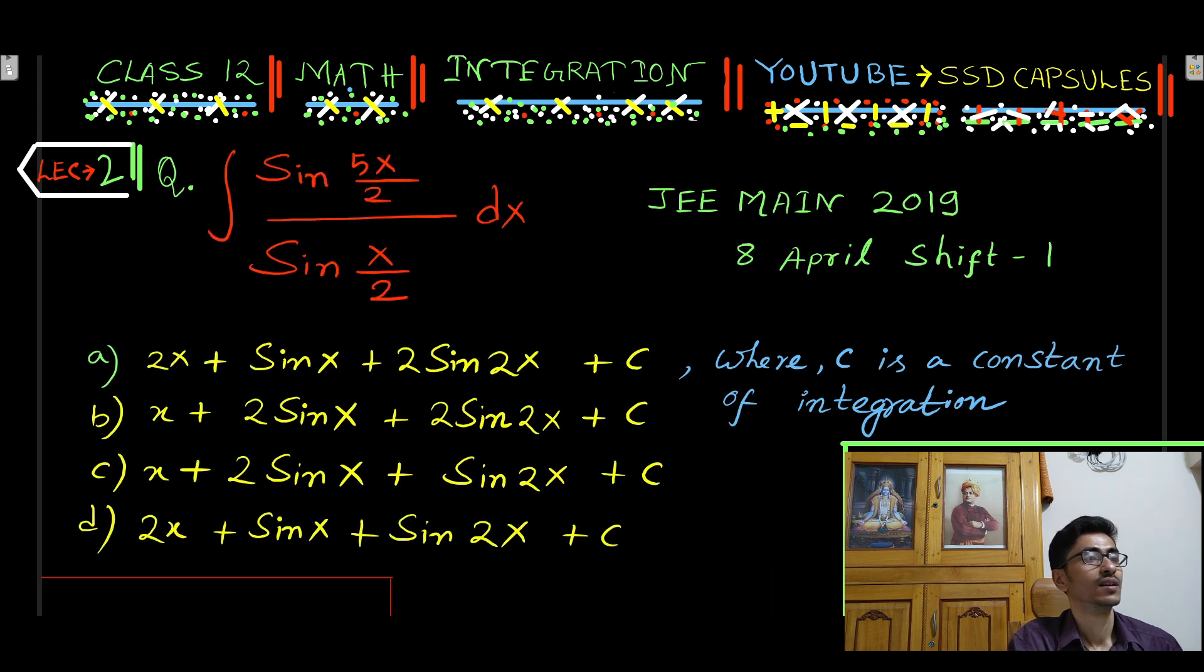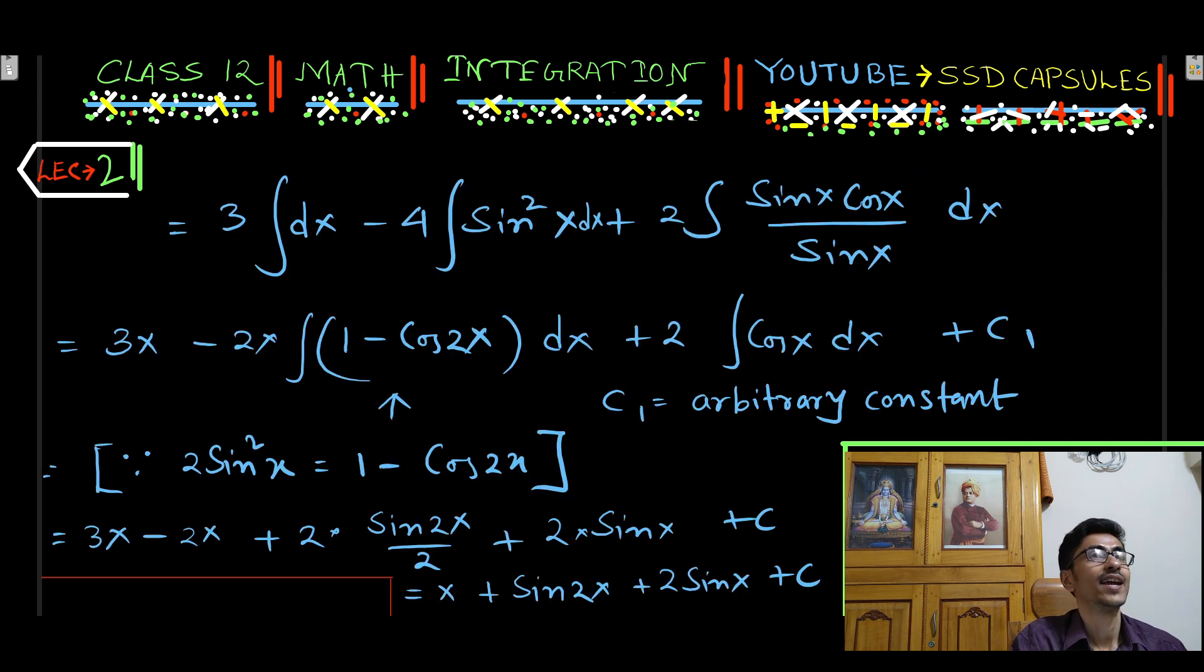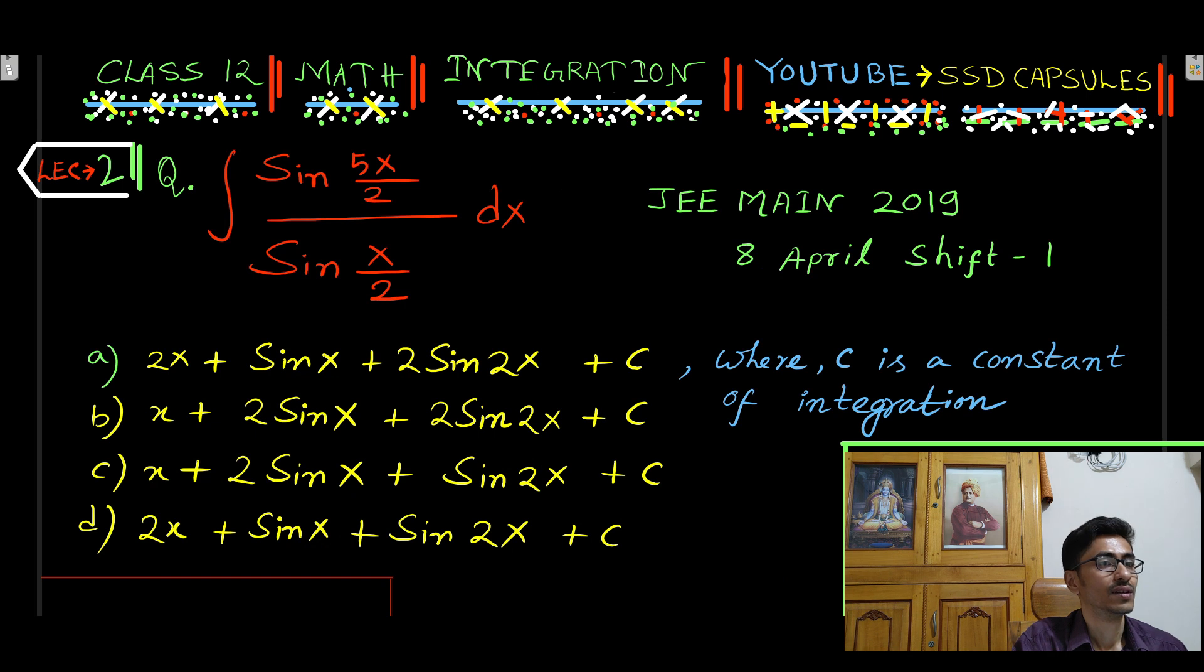Now we will check the options. x plus 2 sin x plus sin 2x, so option c is the correct answer. So answer is option c.